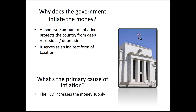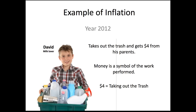The main thing to understand is that inflation occurs because the federal government increases the supply of money. For example, let's say we have a kid named David who loves milk. He does chores for his parents — taking out the trash — and that work is worth $4. His parents give him $4, because money is nothing more than a symbol of work that's been performed. David can then trade that money for the work that somebody else does.